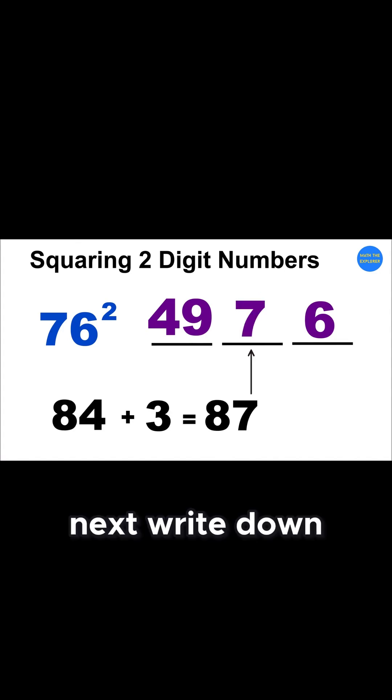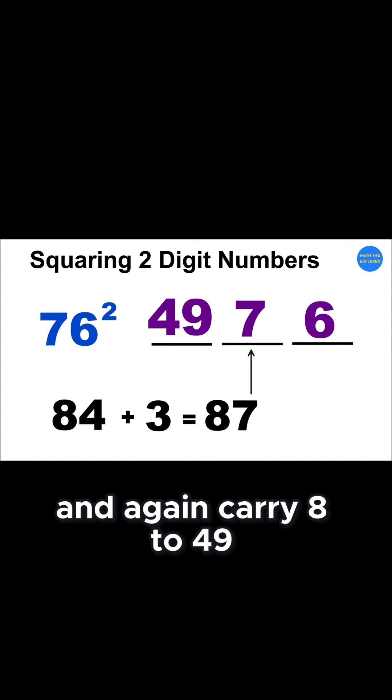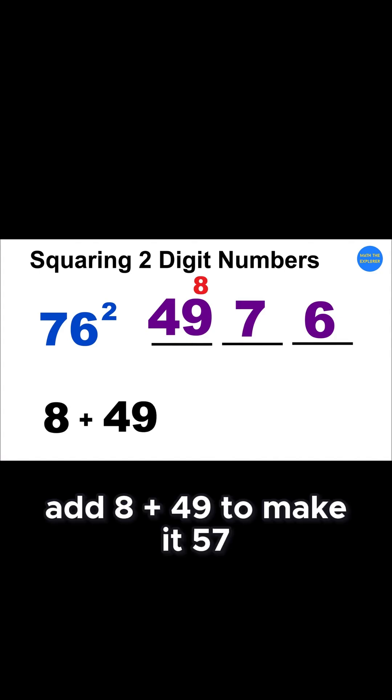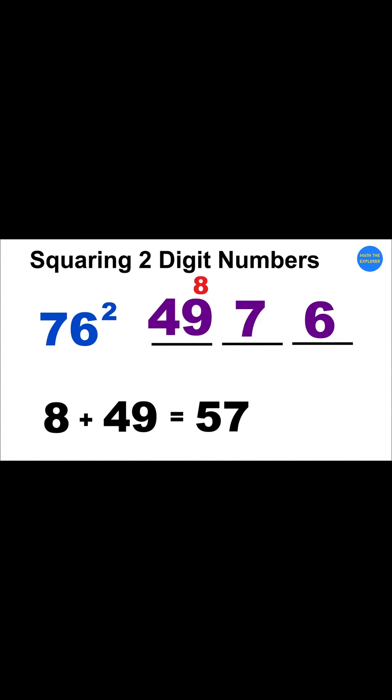Next, write down 7 in the middle part and again carry 8 to 49. Add 8 plus 49 to make it 57. And we're done!